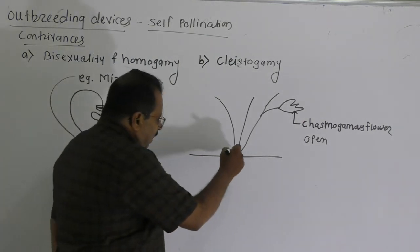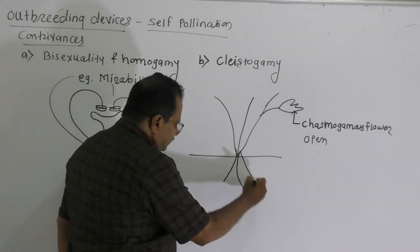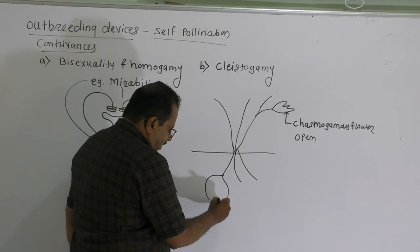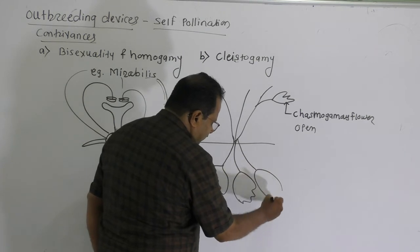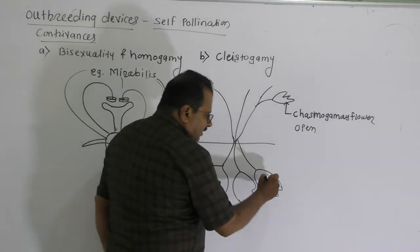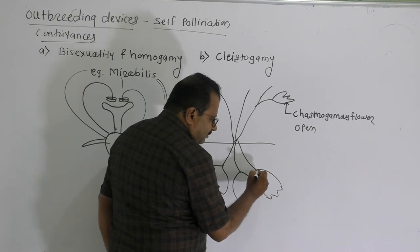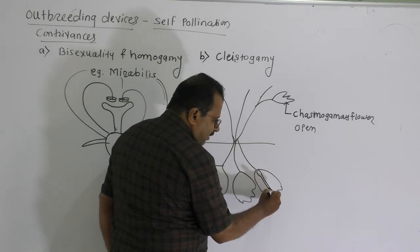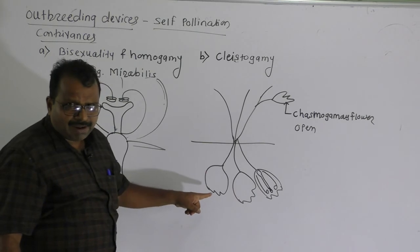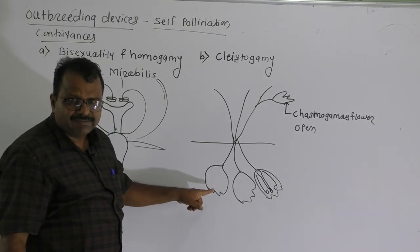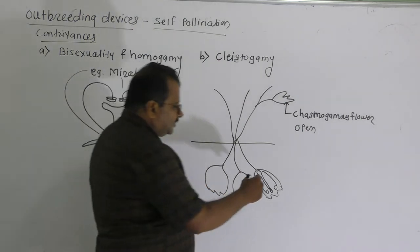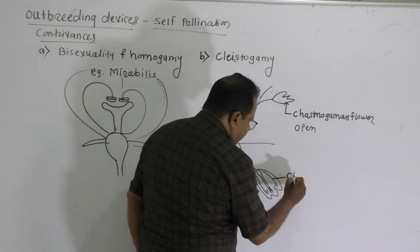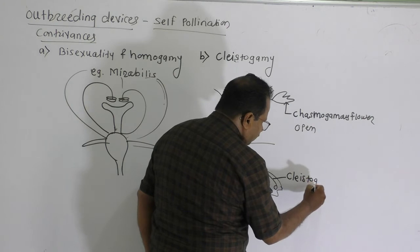Some branches of Commelina bengalensis are underground, and flowers also develop on these underground branches. These flowers are bisexual. Since they are underground, they remain closed — these are called cleistogamous flowers, as they never open.